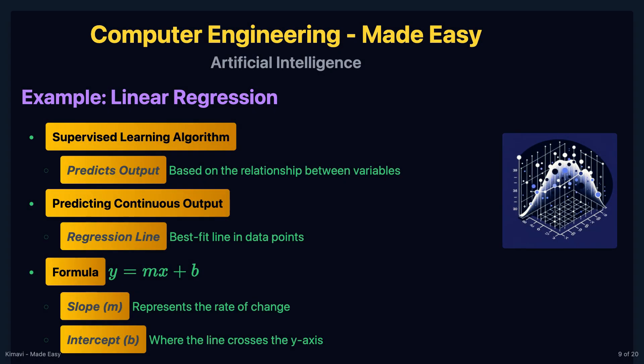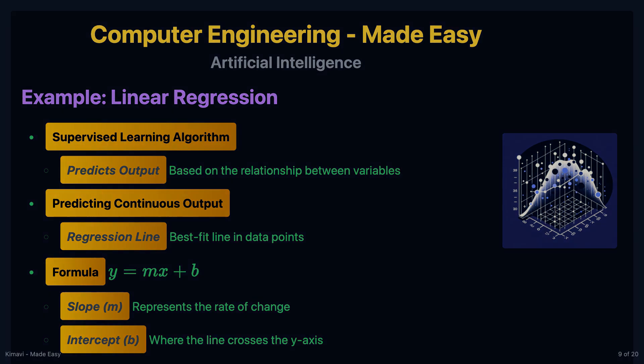Linear regression is a simple supervised learning algorithm used for predicting a continuous output. The relationship between the input variable x and the output variable y is modeled as a linear function: y equals mx plus b. Here, m is the slope of the line and b is the y-intercept. The goal is to find the best-fitting line that minimizes the sum of the squared differences between the observed values and the values predicted by the line.